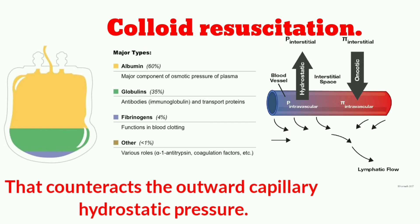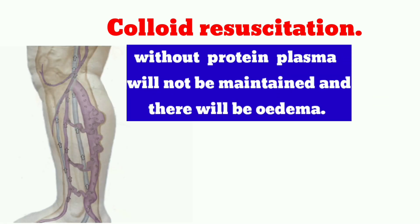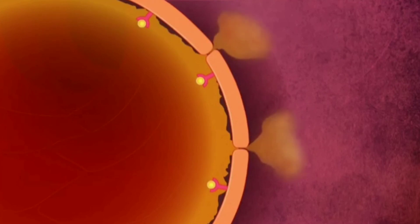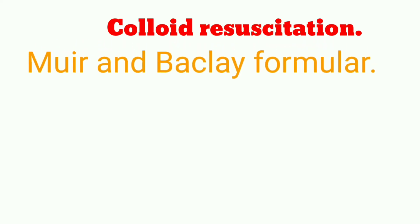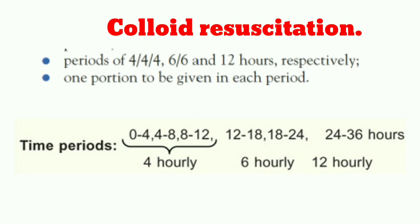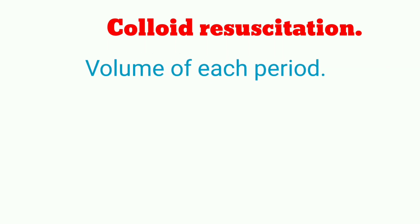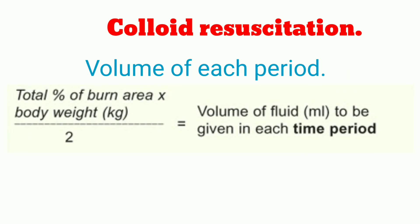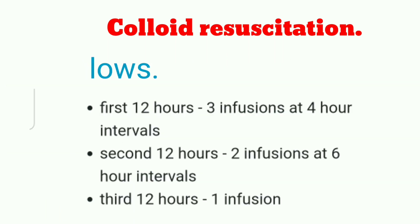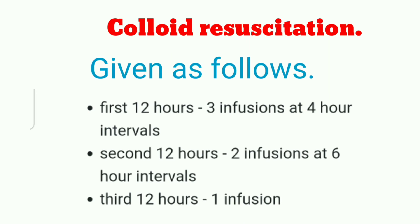Colloid resuscitation: human albumin solution is commonly used. Plasma proteins are responsible for inward oncotic pressure that counteracts outward capillary hydrostatic pressure; without proteins, plasma volume will not be maintained and edema results. Proteins should be given after the first 12 hours of burn, because before this time massive fluid shifts cause protein to shift out of the cell. A common colloid-based formula is the Muir and Barclay formula, which estimates fluid needed during the first 36 hours after a major burn. It divides the total time into six periods of varying duration; each period requires the same volume, calculated as: weight in kg × % TBSA ÷ 2. Infusions are given as: first 12 hours — three infusions at four-hour intervals; second 12 hours — two infusions at six-hour intervals; third 12 hours — one infusion.